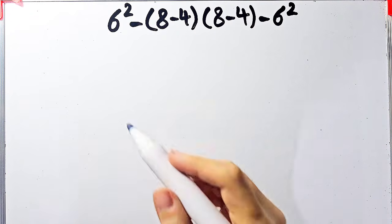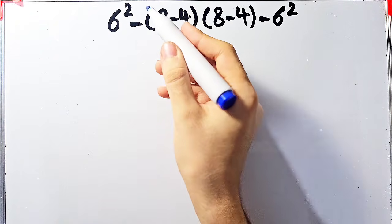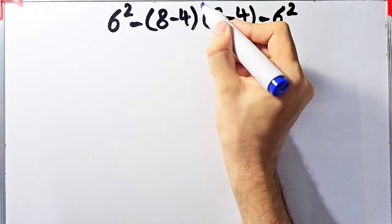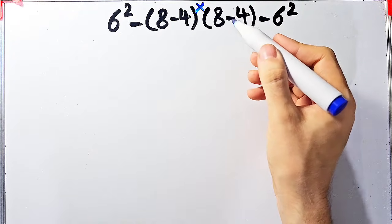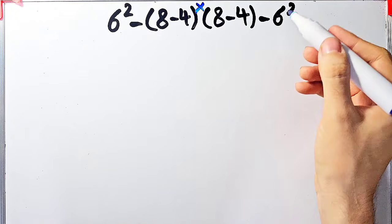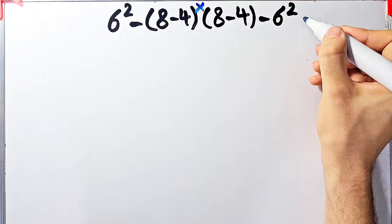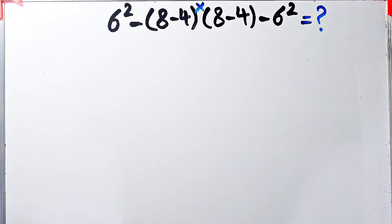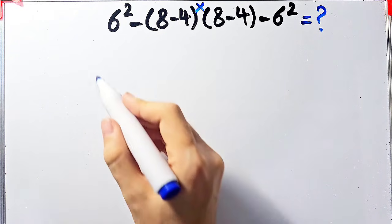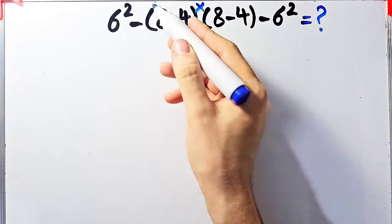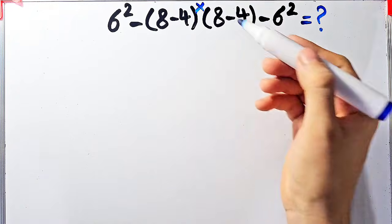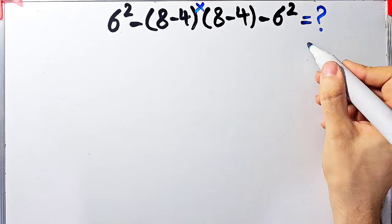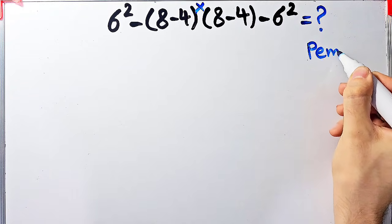Let's solve another question about the PEMDAS rule: 6 to the power of 2, minus (8 minus 4), then times (8 minus 4), minus 6 to the power of 2. In this question we have exponents, subtraction, parentheses, and multiplication. We need to follow the PEMDAS rule.